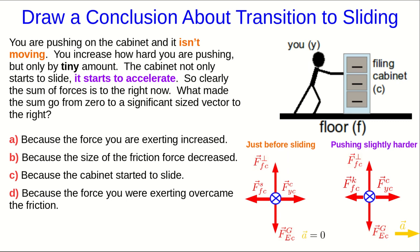So, the cabinet isn't moving even though you're pushing on it. You increase how hard you're pushing, but only by a tiny amount, and the cabinet not only starts to slide, it starts to accelerate at a significant rate. So the sum of forces must have been zero before, and now it's got a significant size to the right, even though you only increased the force of your push by a tiny amount. Why? What's going on?